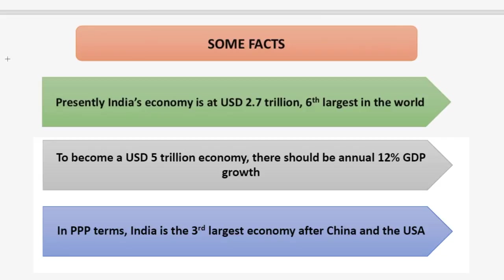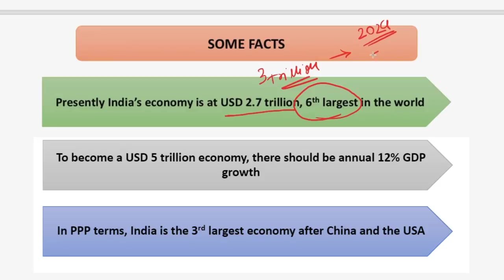Finance Minister Nirmala Sitharaman, while giving the speech for Budget 2019-20, mentioned that presently India's economy is at USD 2.7 trillion and it is the sixth largest economy in the world. So near about 3 trillion — and in the next five years, that is by 2024, it is planning to have a 5 trillion dollar economy. In order to become a USD 5 trillion economy, it is estimated that GDP growth should be 12% annually. If this 12% GDP growth is maintained for the next five years, it will be possible for India to achieve this target.